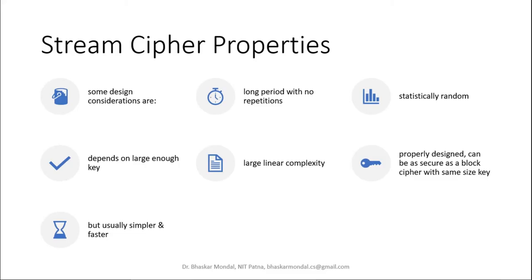The design considerations for Stream Cipher are: long period with no repetition — this is equally important; it should be statistically random; it depends on a large enough key; and it should have large linear complexity.